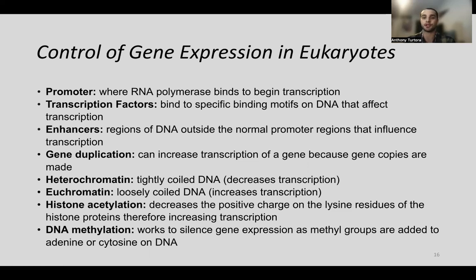It's important for the MCAT to know the differences between prokaryotes and eukaryotes in gene expression. Prokaryotes use simpler, faster-adapting mechanisms — activators, repressors, enhancers, and promoters. Eukaryotes are more sophisticated and don't adapt as quickly. Additionally, eukaryotes have a nuclear envelope — absent in prokaryotes — which adds spatial and temporal control to transcription.